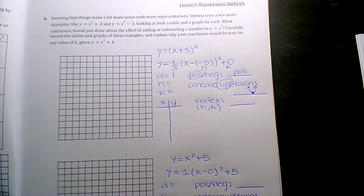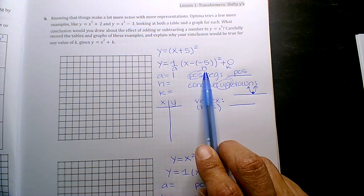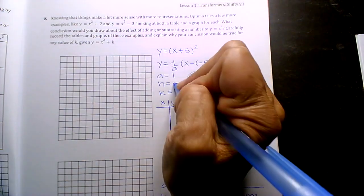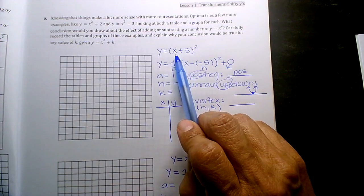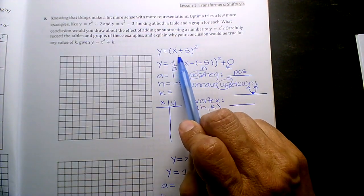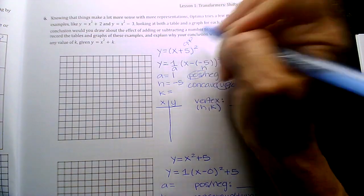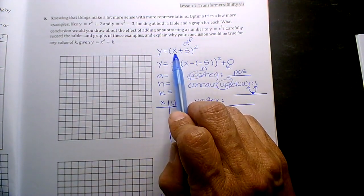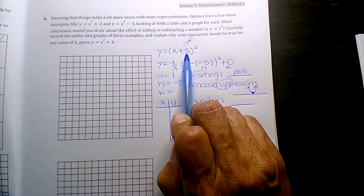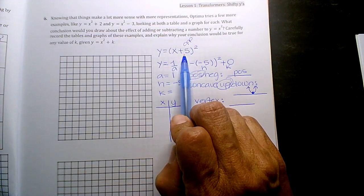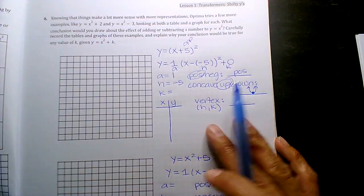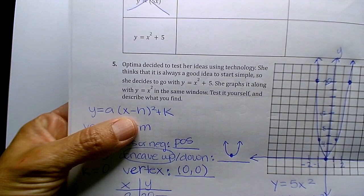Alright, what's my h value? Negative 5. So look, when you guys see x plus 5, whatever's inside the parenthesis, you're always going to go opposite h. So you're looking at x plus 5, it looks like h is positive, but you go opposite what you see, which is negative 5, because the form is really x minus h squared plus k.